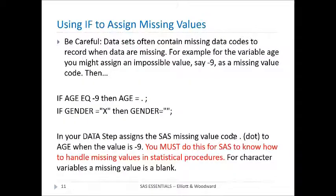OK, let's look at another way to use if, and that is to assign missing values. You need to be careful with data sets that you get from someone, some other source, because a lot of times they'll have missing value codes in them. For instance, let's say that we have the variable age in our data set, and sometimes if people didn't know what a person's age is, they put in a missing value code instead, like negative 9. Then what we need to do is change that negative 9 into the SAS missing value code, which is a dot.